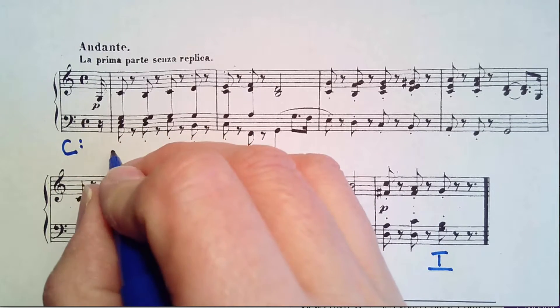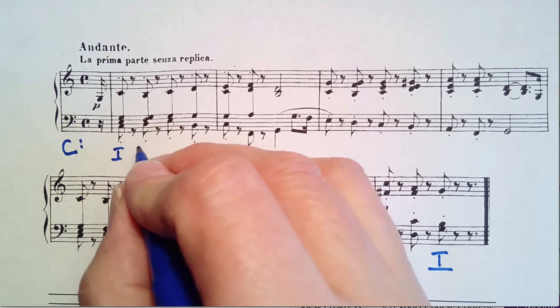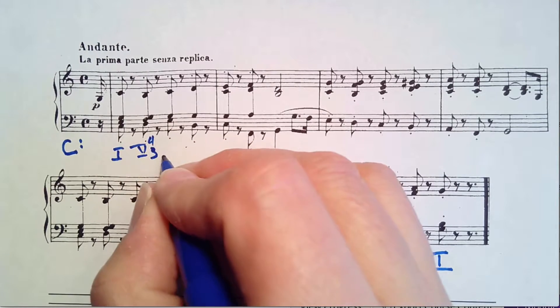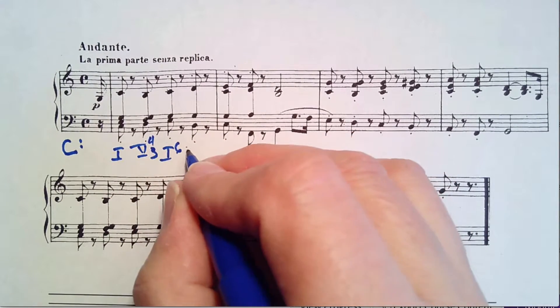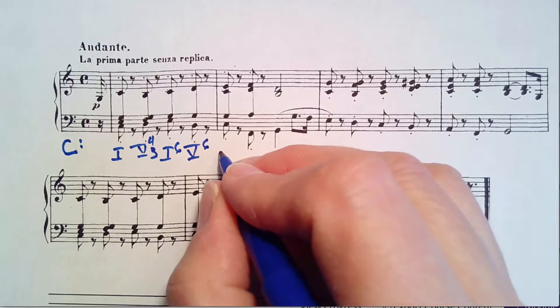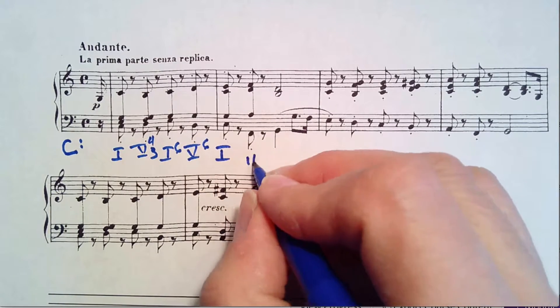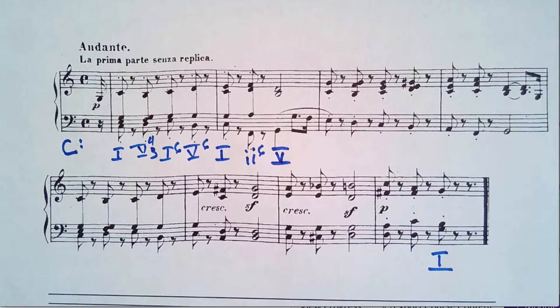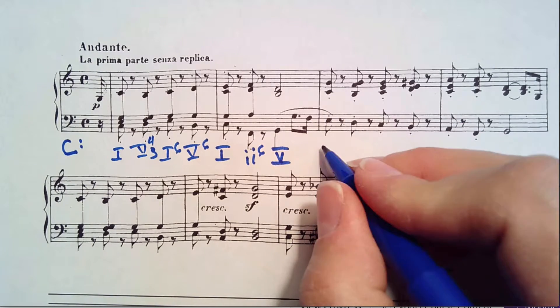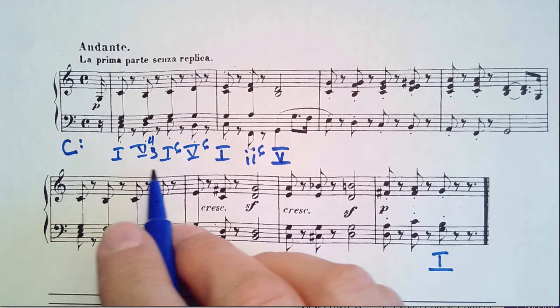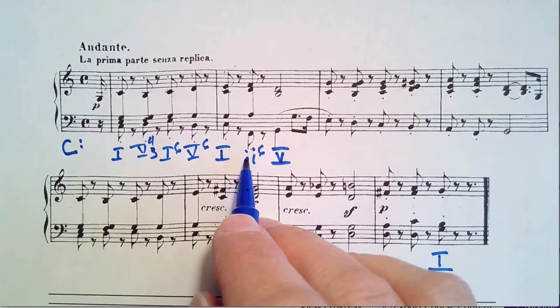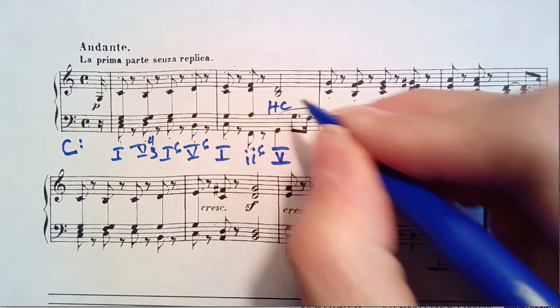So here we've got one, five, four, three, one, six, five, six, one, two, six, five. Again, a lot of one, five, one. Very end, we go two, six, five to set up our half cadence.